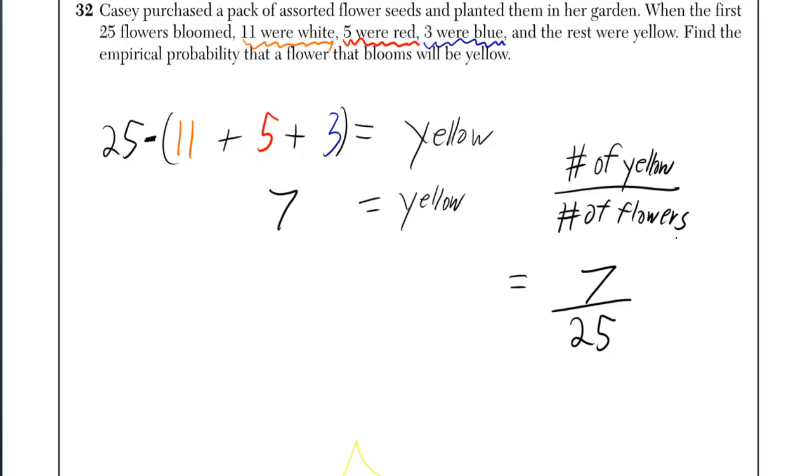The empirical probability is your best guess based upon what's happened so far. And the way it's defined is that you do the number of yellow divided by the number of flowers.